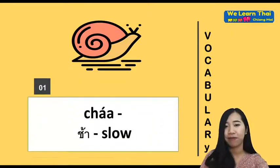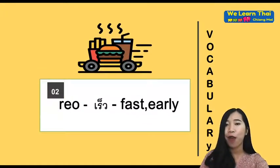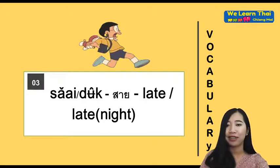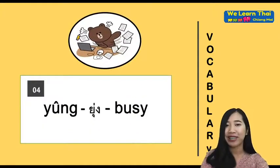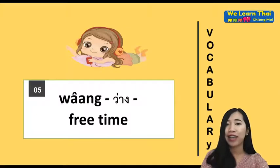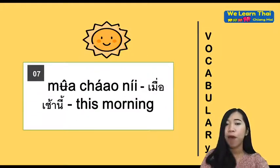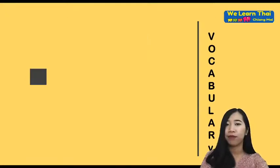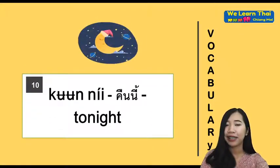Vocabulary: ช้า (cha) means 'slow.' เร็ว (reo) means 'fast.' สาย (sai) means 'late' for daytime, and ดึก (duek) means 'late at night.' ยุ่ง (yung) means 'busy.' ว่าง (wang) means 'free time.' กลับ (klap) means 'back' or 'return.' มื้อเช้านี้ or เช้านี้ means 'this morning.' มื้อคืนนี้ means 'last night.' คืนนี้ means 'tonight.'